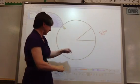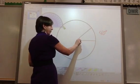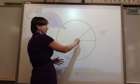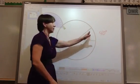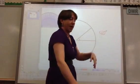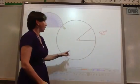My 40-degree sector—this right here would represent 40 degrees. Then I would be able to color in that section and label it whatever that section was.